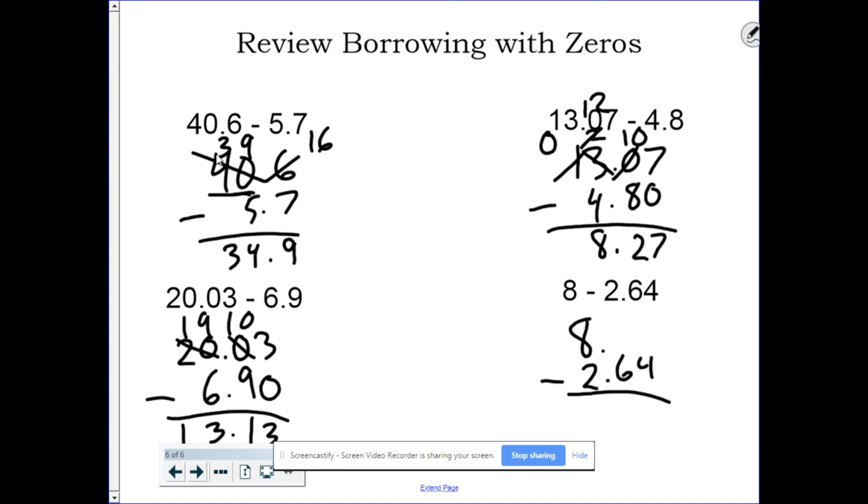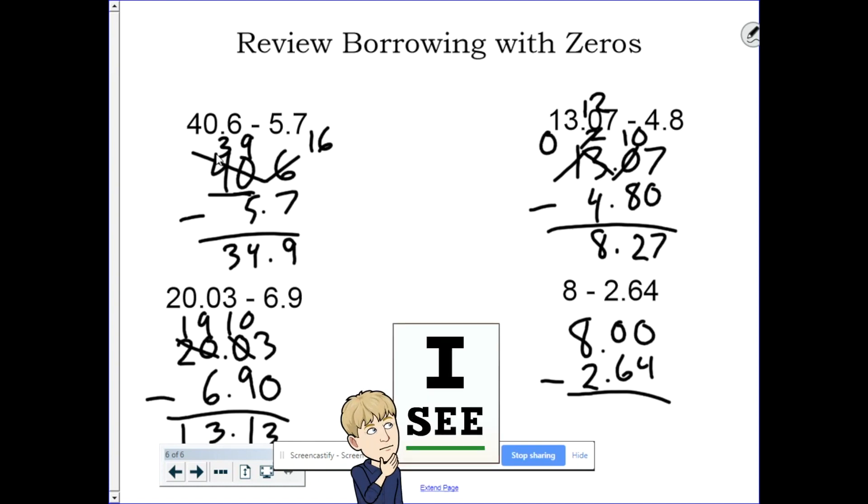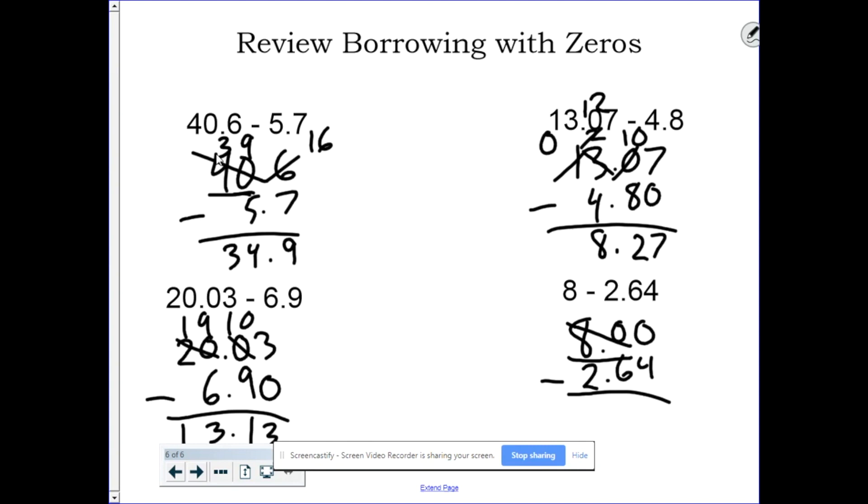A lot of students, if they don't fill in that gap, would just bring the 64 straight down. But remember, if we put our zeros in, now we need to focus on the decimal places. I can't do 0 minus 4, so I need to borrow next door, but I can't do that either. So instead of thinking of it as zero, think of this as 80. Borrow from my 80, it becomes 79, and that 0 becomes a 10.